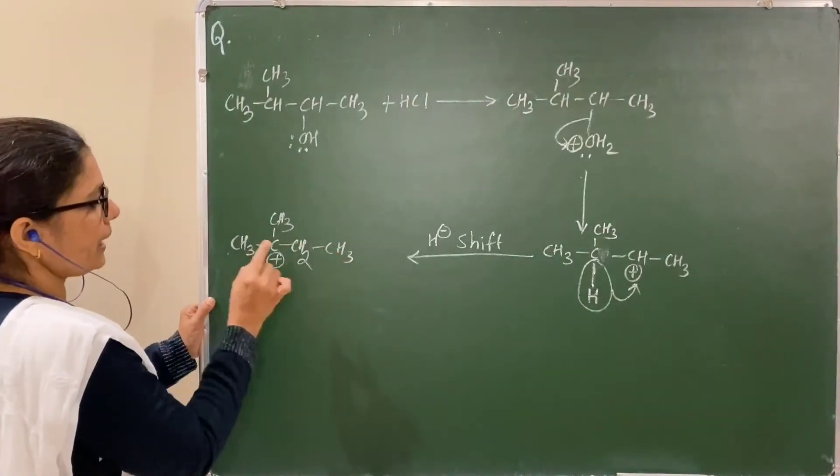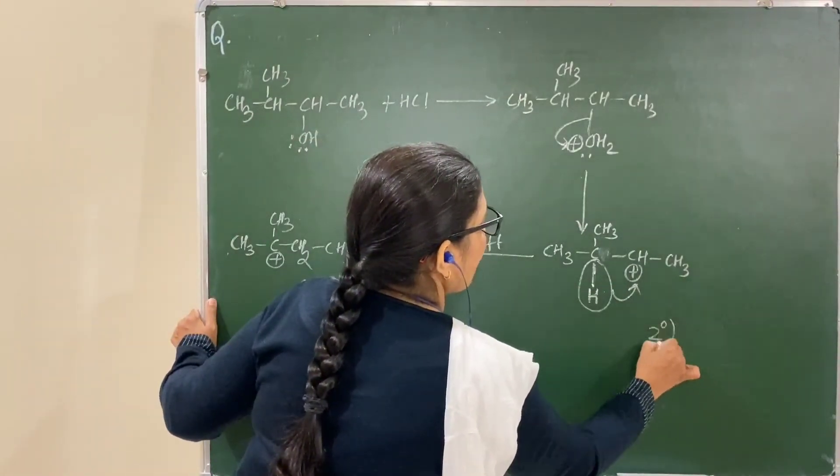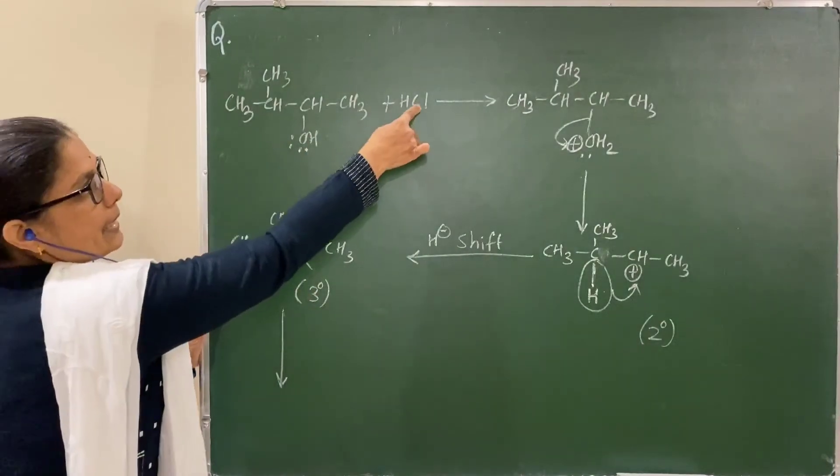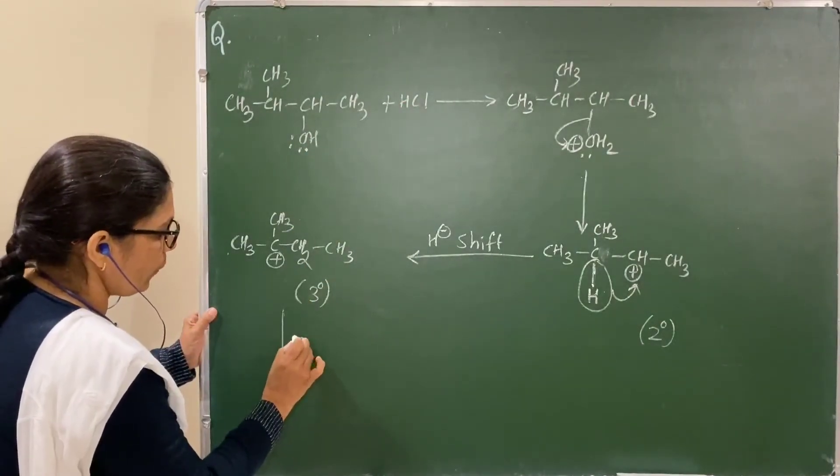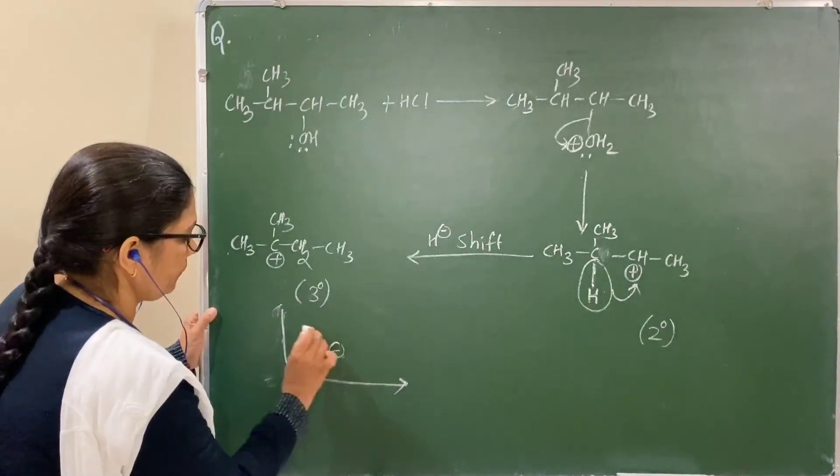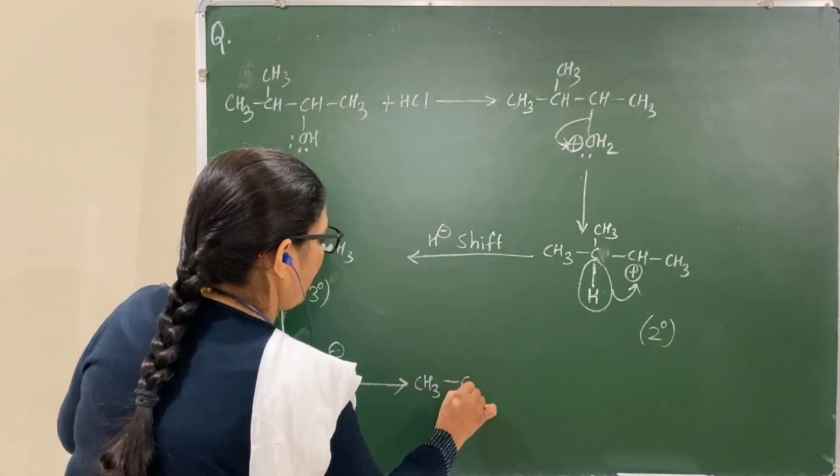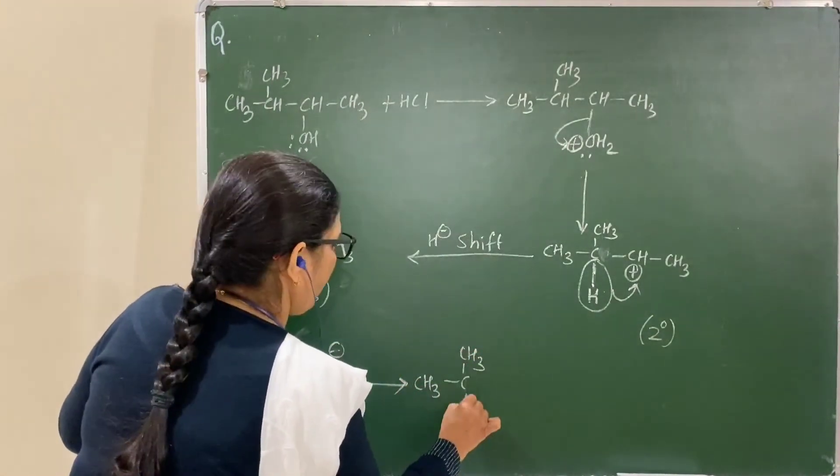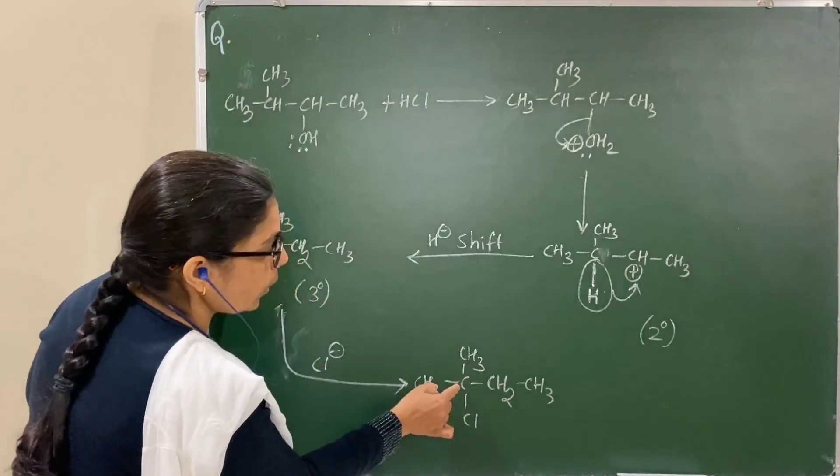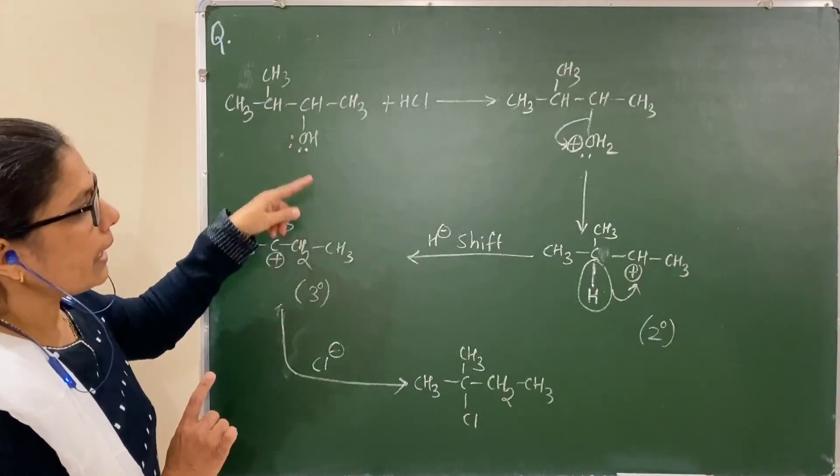This carbocation is tertiary while the previous one was secondary. It is more stable, therefore it forms. Now Cl minus attacks here to form 2-chloro-2-methylbutane, not the other product.